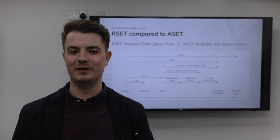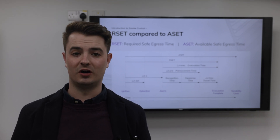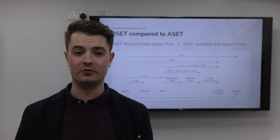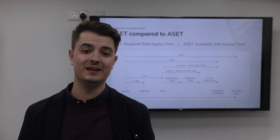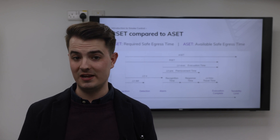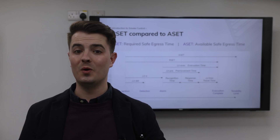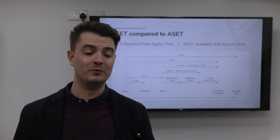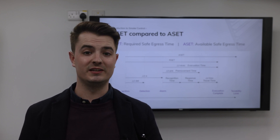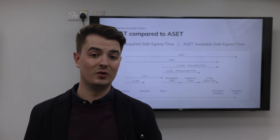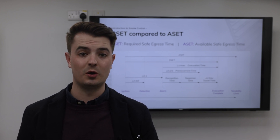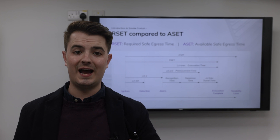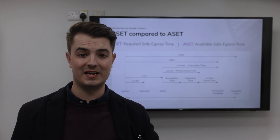The ASET is the length of time we can maintain tenability in the fire escape routes. We've covered tenability in a previous video, but what we're talking about is conditions that don't cause incapacitation — that's what we mean by tenability. So ASET is how long we can keep the escape routes safe for people to escape through. When designing a building, we can build up the ASET using various things such as the type of non-combustible material or fire load, ceiling heights, smoke ventilation systems, sprinklers, and so on. In a very loose sense, the more passive and active fire protection methods we add, the longer the ASET becomes.